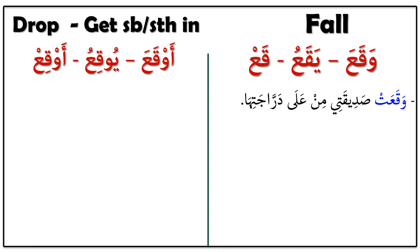وَقَعَتْ — the sentence is: وَقَعَتْ صَدِيقَتِي مِنْ عَلَى دَرَّاجَتِهَا. It means 'My friend fell off her bicycle.' Next sentence.